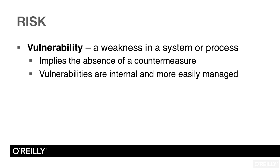Welcome back to our lessons on Domain 1 in CISSP. In this lesson we're going to look at risk. One of the components required for risk to occur is the notion of vulnerability. A vulnerability is a weakness in a system or a process — when you hear the term vulnerability, you think of weakness.